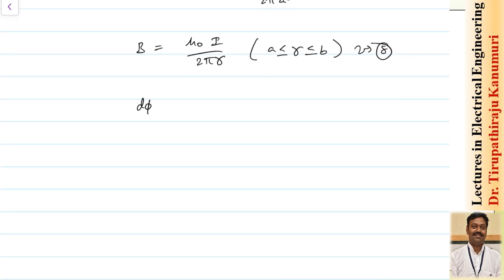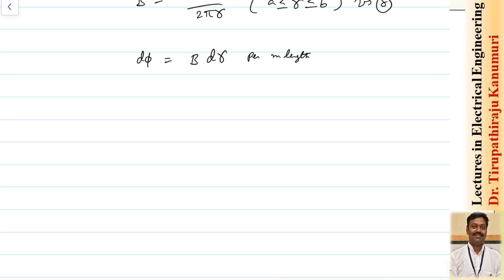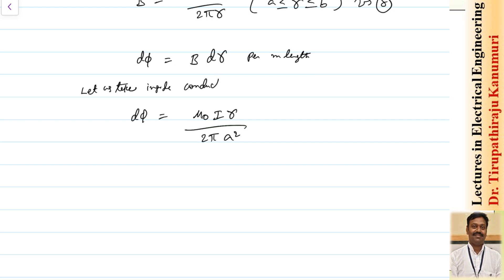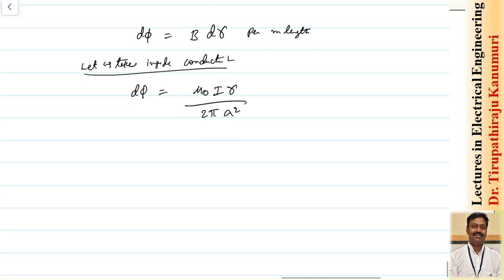Taking length equal to unity, the differential flux inside the conductor at radius r is dΦ = B' dr = (μ₀I r / 2π A²) dr. We derive the internal and external flux linkages separately.